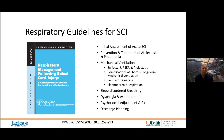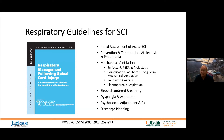Respiratory guidelines for spinal cord injury came out from the PVA Consortium Clinical Practice Guidelines in 2005, addressing initial assessment of acute spinal cord injury, how to prevent and treat atelectasis and pneumonia, mechanical ventilation settings and their influence on surfactant, PEEP, and atelectasis, as well as prevention of short-term and long-term complications, ventilator weaning, and electrophrenic respiration.